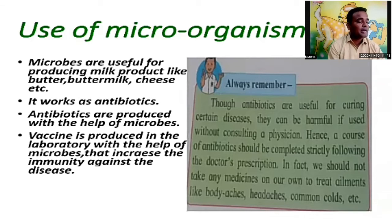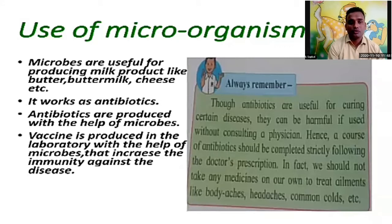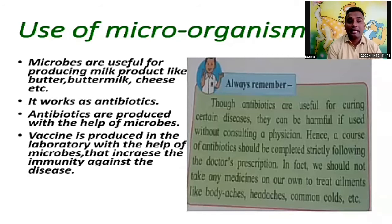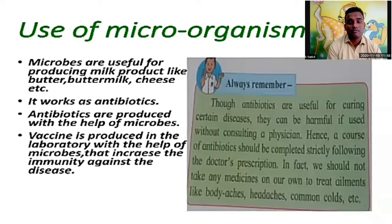Nowadays everyone is talking about the corona vaccine. Vaccine is made from microbes in the laboratory. You may know about polio immunization — many types of vaccines are made from microbes or microorganisms. Things like yogurt, butter, and buttermilk exist because of microorganisms that bring about changes in the food.